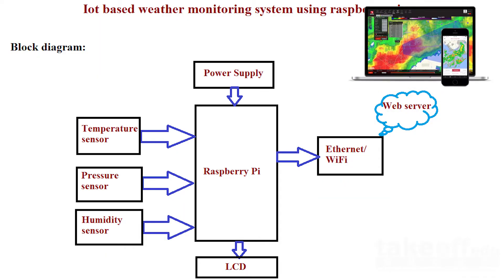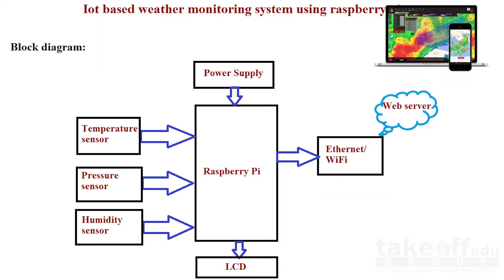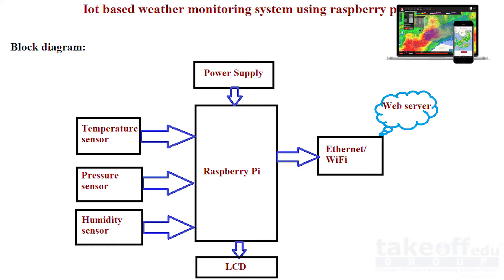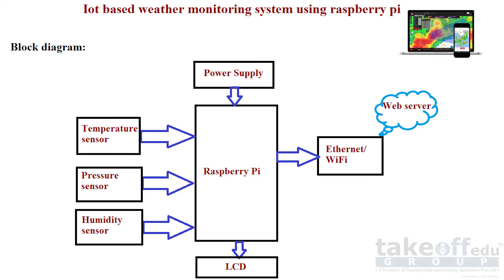Hi guys, welcome to Take Up Room. Today I am here with a new project. The project title is IoT based weather monitoring system using Raspberry Pi. This project is used for real time monitoring of different environmental parameters using IoT.